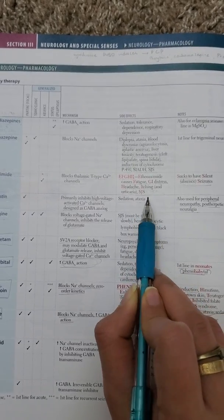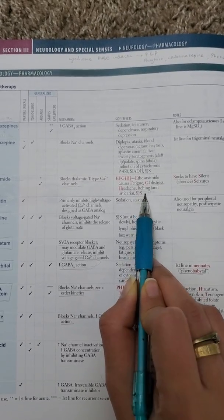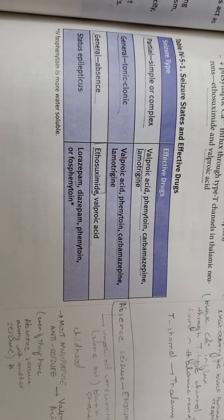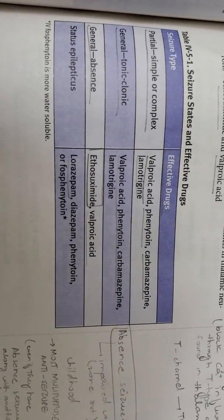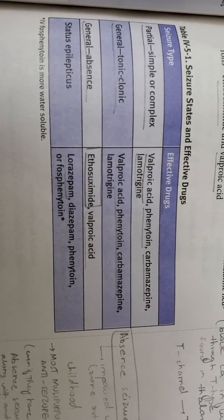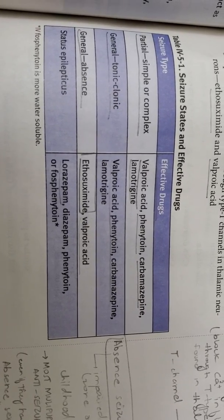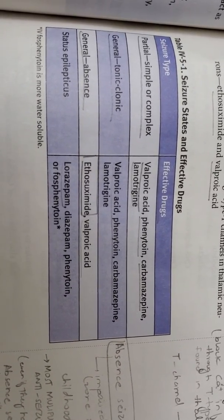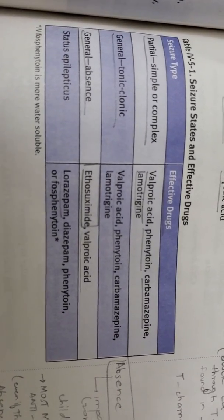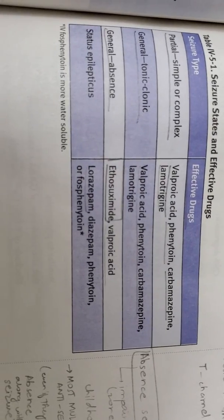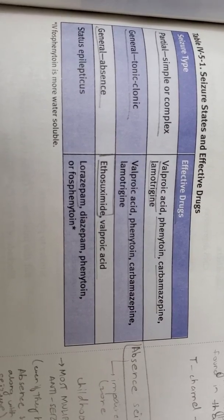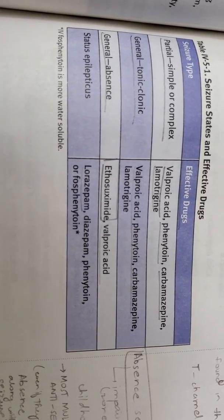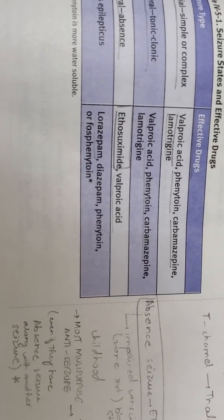Stevens-Johnson Syndrome is a very important side effect of ethosuximide. Ethosuximide is the only drug used for absence seizures. This table shows the important drugs used for seizures: for partial simple and complex seizures — valproic acid and phenytoin; for generalized tonic-clonic seizures — valproic acid, phenytoin, carbamazepine; for generalized absence seizures — ethosuximide; and for status epilepticus — lorazepam, diazepam, and phenytoin.